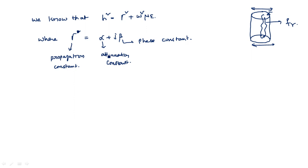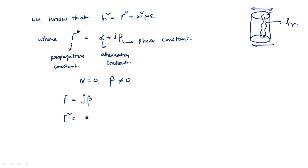For the resonant condition, the signal travels inside the waveguide and there is no attenuation, so α = 0. β is non-zero because the signal undergoes multiple reflections inside the cavity, so there is definitely a phase constant. Therefore, γ = jβ, and γ² = j²β² = −β².